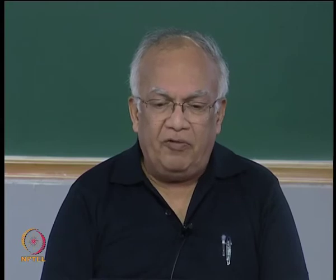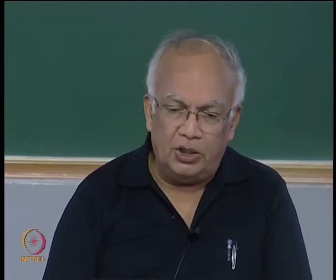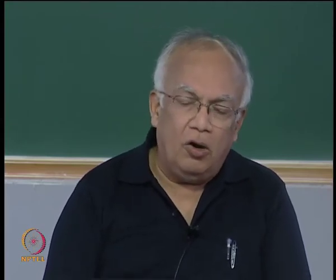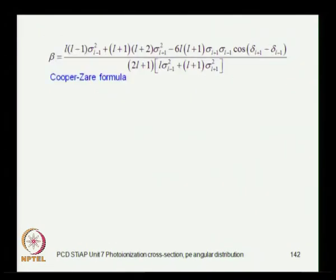The differential cross section must be a positive quantity — it is a transition probability — so 1 + β·P₂(cosΘ) ≥ 0. Since cosΘ ranges from 0 to π, cos²Θ takes values only between 0 and 1. Substituting the minimum and maximum values of cos²Θ yields limits on β: β ≥ −1 and β ≤ +2. So the angular distribution asymmetry parameter always lies in the range −1 ≤ β ≤ 2.